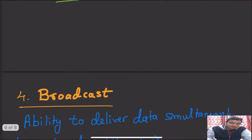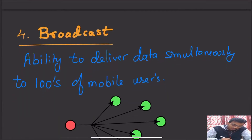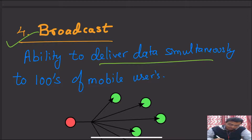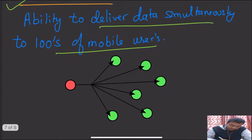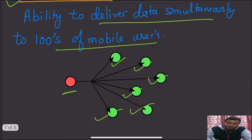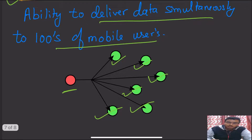Our fourth point is broadcast. Broadcast is the ability to deliver data simultaneously to hundreds of users. As shown in the figure, you are able to send data to multiple users at the same time, and this ability is a feature and characteristic of mobile computing.